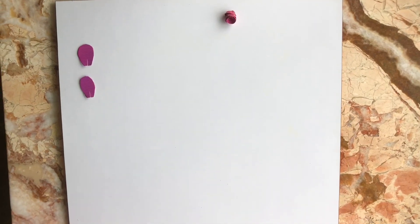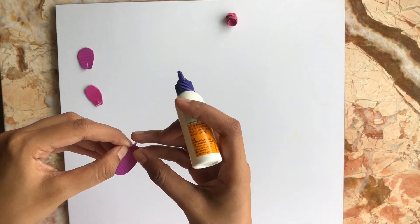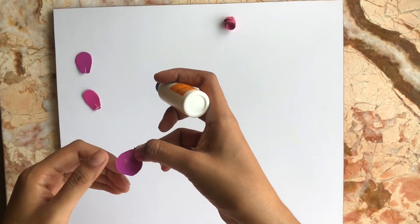For our next step, we will take the petals and stick one flap over another like this.